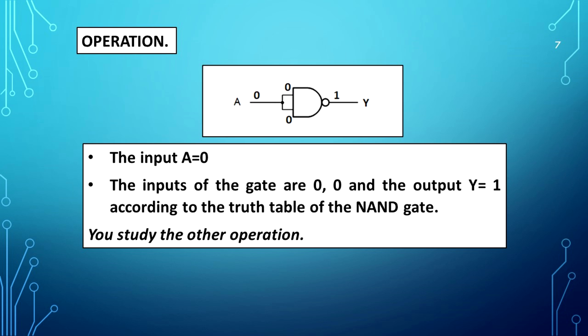Operation: When input A equals 0, the inputs of the gate are 0,0, and the output Y equals 1, according to the truth table of the NAND gate. You may study the other operations similarly.